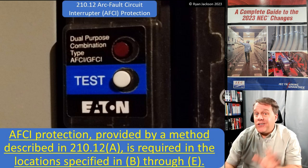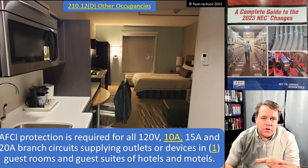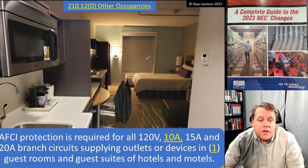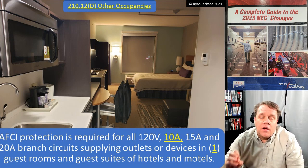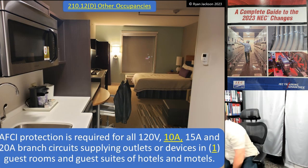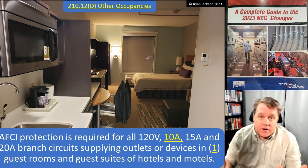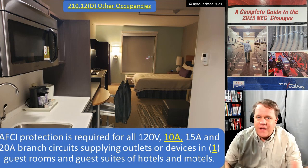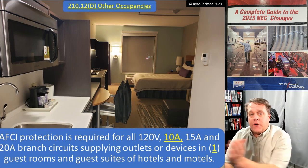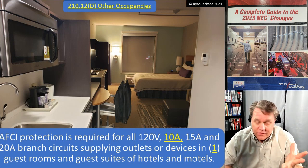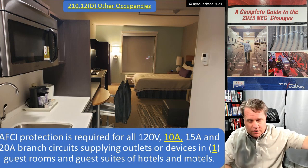Not a lot of changes here. They added 10-amp circuits, so 210.12(d) now requires AFCI protection for all 120-volt, 10-amp, 15-amp, and 20-amp branch circuits supplying outlets or devices. But let's set aside the 10-amp thing — they're not making a 10-amp AFCI. Nobody's putting in 10-amp circuits right now. If some things happen in 2026 you might see 10-amp branch circuits, but for right now, just forget that.